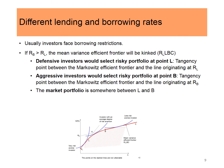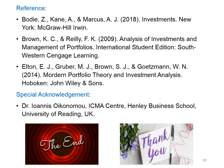Let's conclude our findings. Usually, investors face borrowing restrictions. A defensive or risk-averse investor would select a risky portfolio at point L, which is the tangency point between the Markowitz efficient frontier and the line originated at RL. On the other hand, an aggressive or risk-taking investor would select a risky portfolio at point B, which is the tangency point between the Markowitz efficient frontier and the line originated at RL. The market portfolio is somewhere between L and B. Thank you. I hope you can understand this session. See you and goodbye.